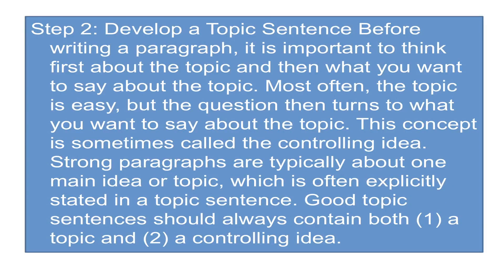Step 2: Develop a topic sentence. Before writing a paragraph, it is important to think first about the topic and then what you want to say about it. The question turns on what you want to say — this concept is sometimes called the controlling idea. Strong paragraphs are typically about one main idea, explicitly stated in a topic sentence. Good topic sentences should always contain both a topic and a controlling idea.